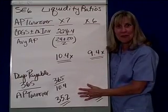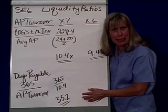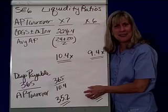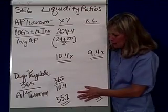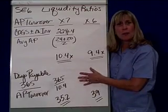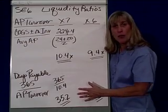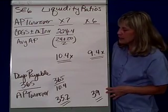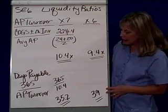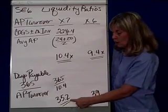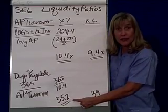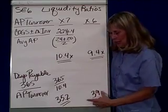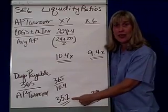So it takes me 35.2 days to pay my bills. Not even once a month do you sit down to pay your bills. So is that a good thing or a bad thing? Well, that depends. One thing I would want to do is compare it to the previous year. If I figure my days payable for X6, I see it's 39 days. So the time between when I receive a bill and when I pay a bill is getting shorter — and that's a good thing.